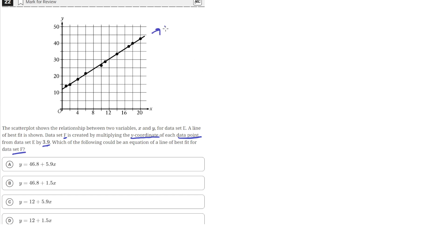So, this is data set E and its respective line of best fit. We need to find the equation of line F, which will be a line of best fit created for points in data set E, but with their Y coordinates multiplied by 3.9.